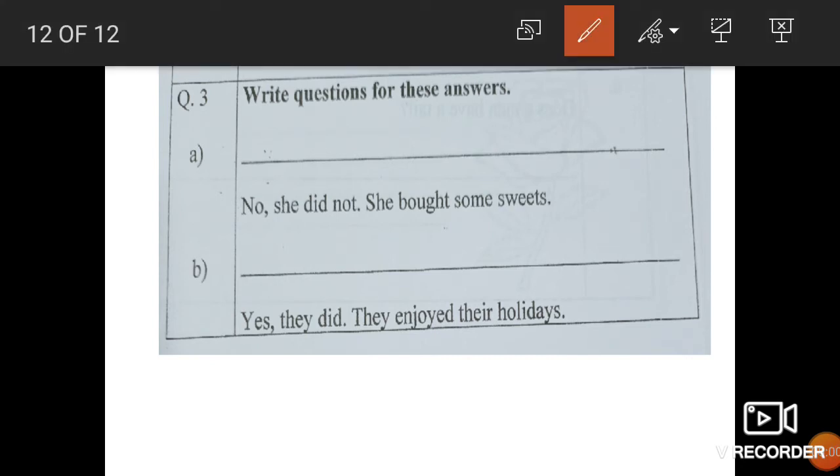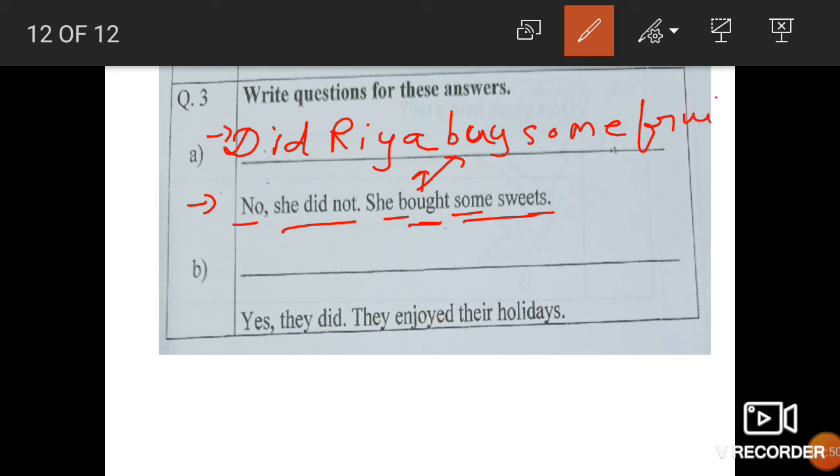Write question for these answers. You have to make question. Now remember, when answer is given with no, that means question will be something different. So answer is no she did not. She bought some sweets. Now they are talking about Riya. So we will make question. Did. You have to make the question with did. Did Riya. Now here bought is there. Its present form is buy. Did Riya buy and repeat this. Some fruits. We will change it. Fruits. Why? Because answer is different. Did Riya buy some fruits? No she did not. She bought some sweets.